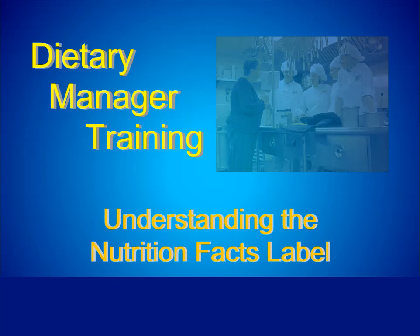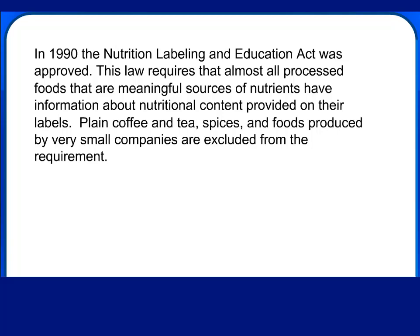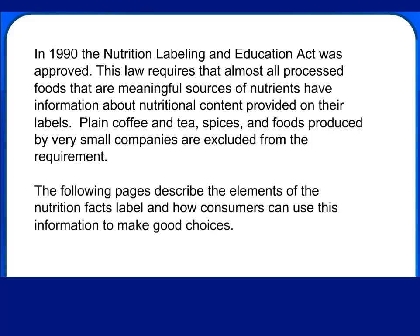We'll also go through some examples for review. In 1990, the Nutrition Labeling and Education Act was approved. This law requires that almost all processed foods that are meaningful sources of nutrients have information about nutritional content provided on their labels. Plain coffee and tea, spices, and foods produced by very small companies are excluded from the requirement. The following pages describe the elements of the Nutrition Facts Label and how consumers can use this information to make good choices.